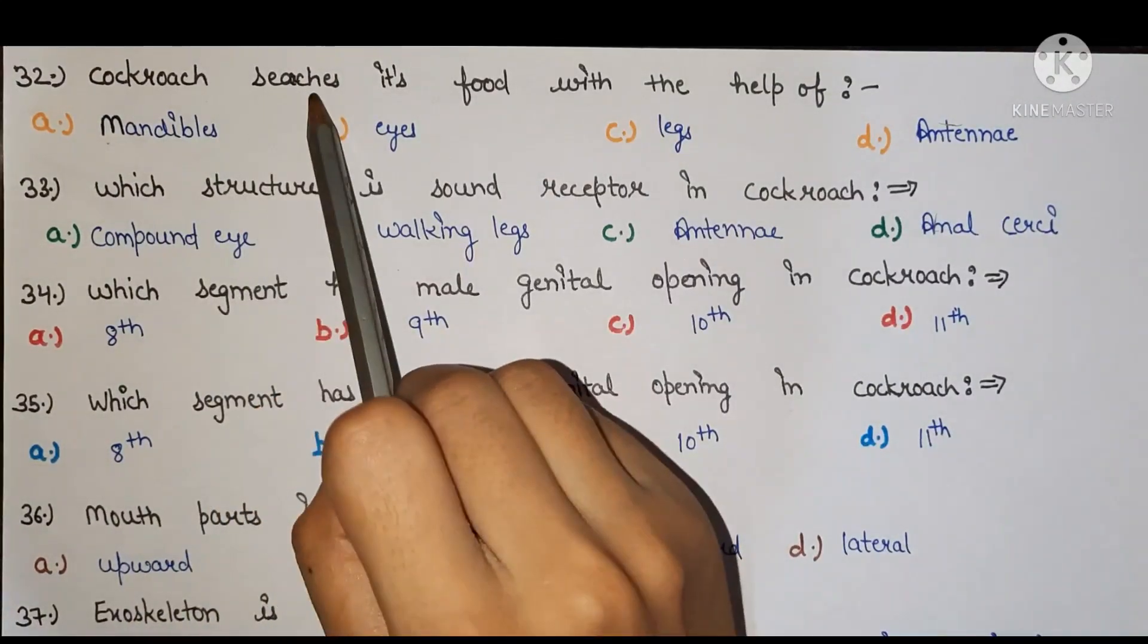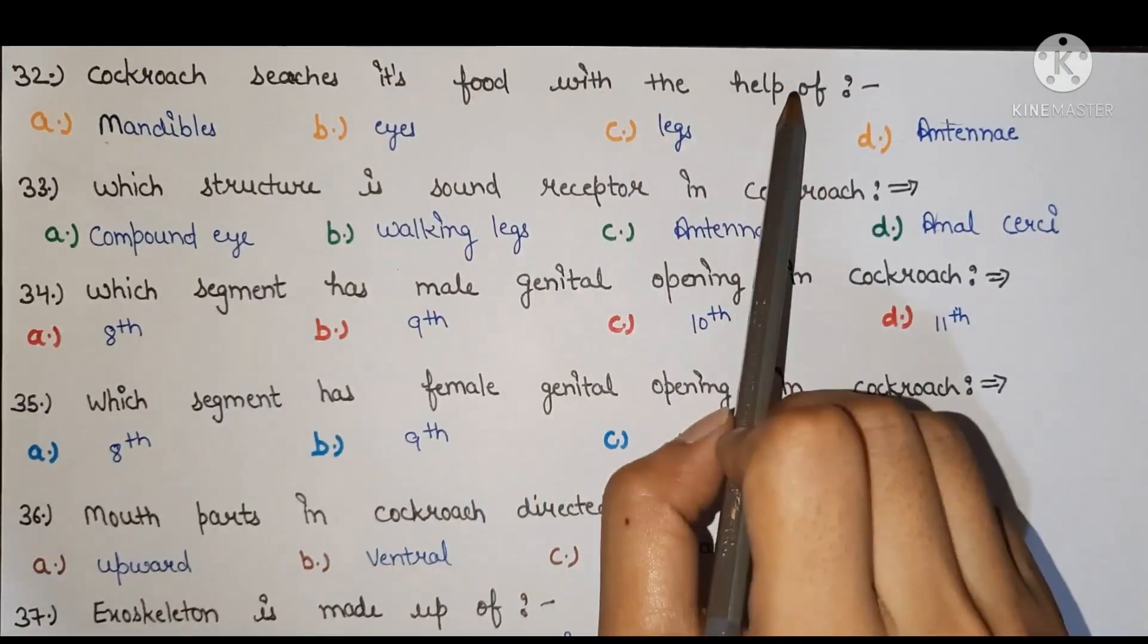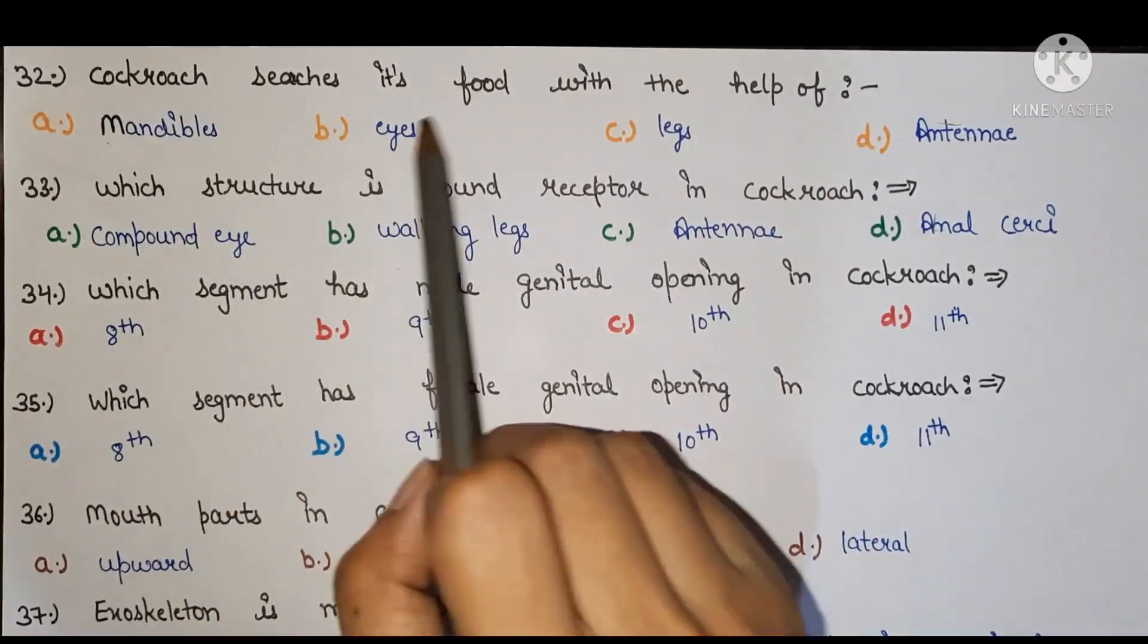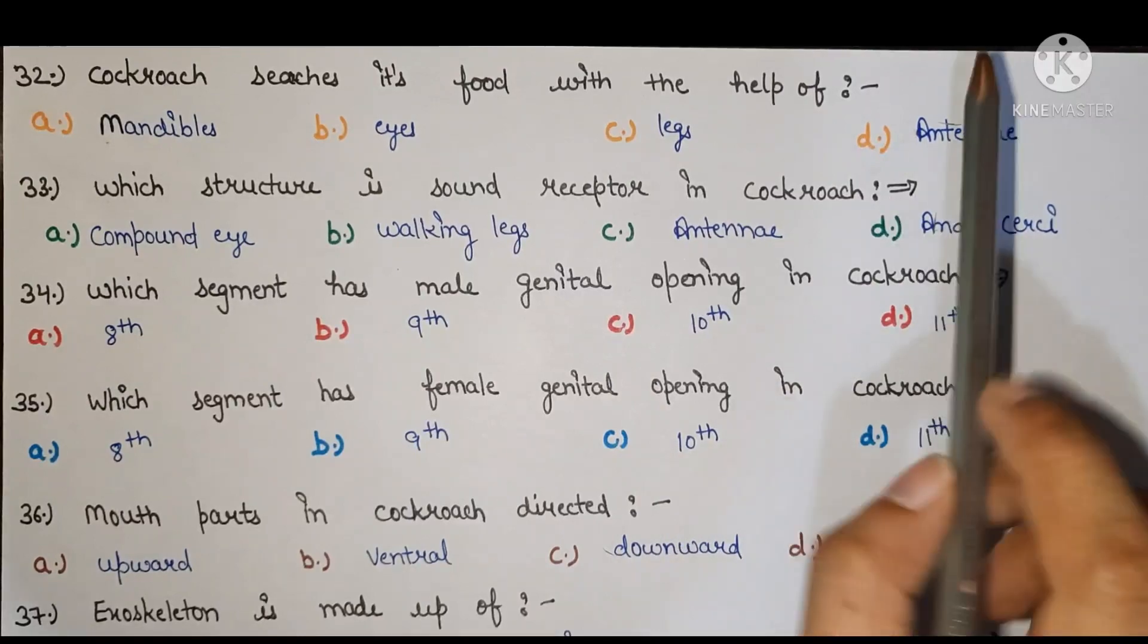Next, cockroach searches its food with the help of A mandibles, B eye, C legs, D antenna. Right answer is D antenna.